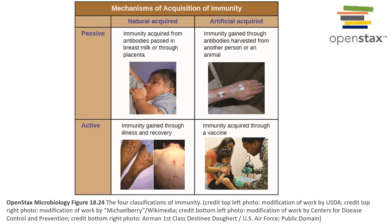They'll only be protected as long as they have their mother's antibodies in their body. Similarly, there's artificially acquired passive immunity, where you can receive an injection of antibodies or an injection of blood. This injection will come from another person or an animal that has been exposed to the pathogen and already developed immunity.